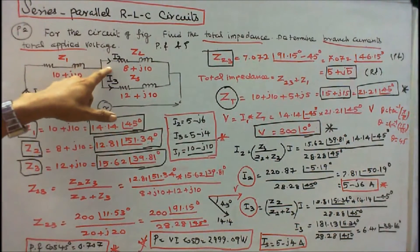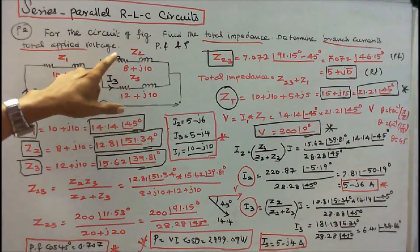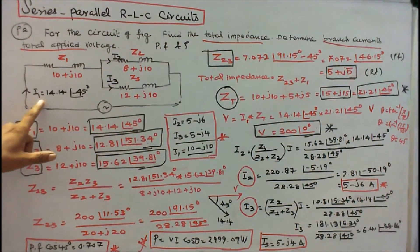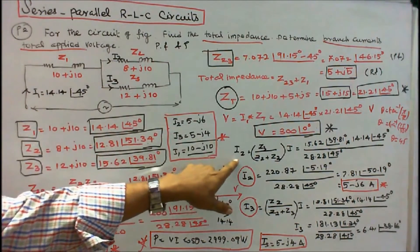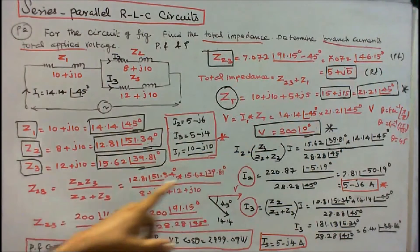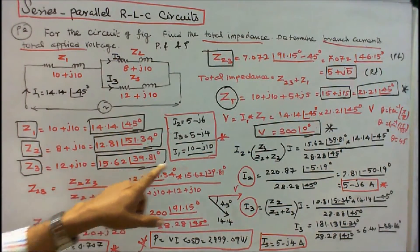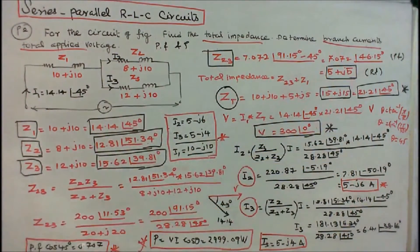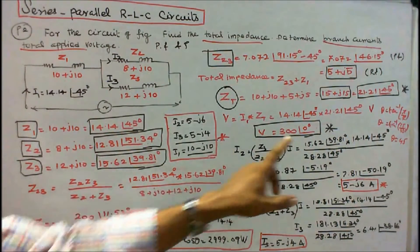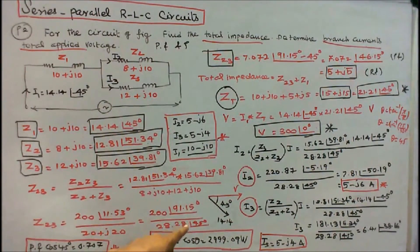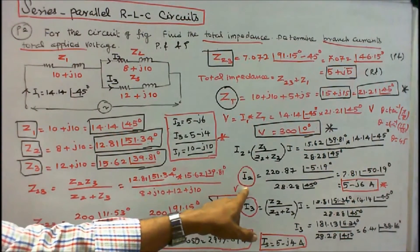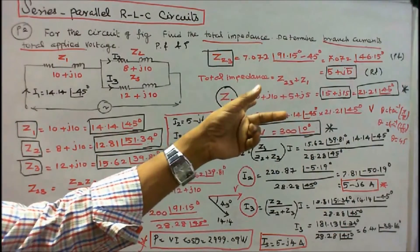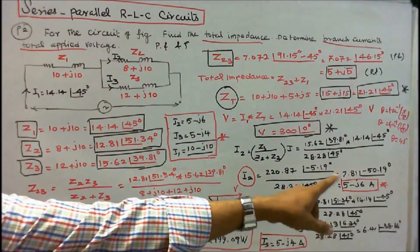I can find the branch current I2. I2 = [Z3 / (Z2 + Z3)] × total current I1 = (15.62∠39.81° × 14.14∠−45°) / (Z2 + Z3). Z2 + Z3 = 20 + j10 in rectangular form, which is 28.28∠45° in polar form. Therefore I2 = 7.81∠−50.19° in polar form, or 5 − j6 amps in rectangular form.